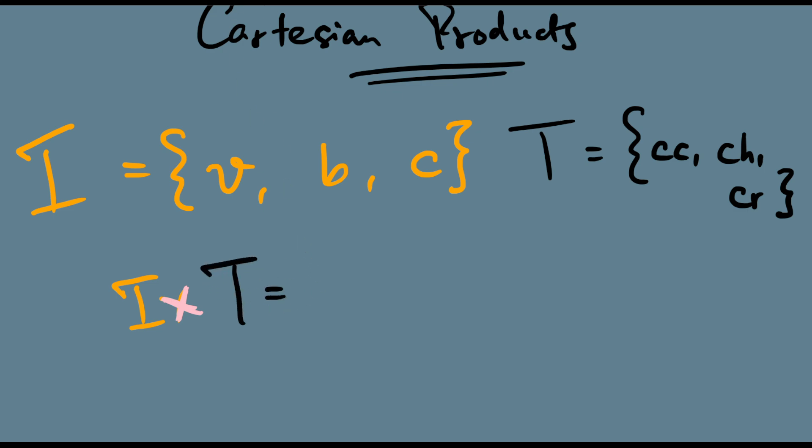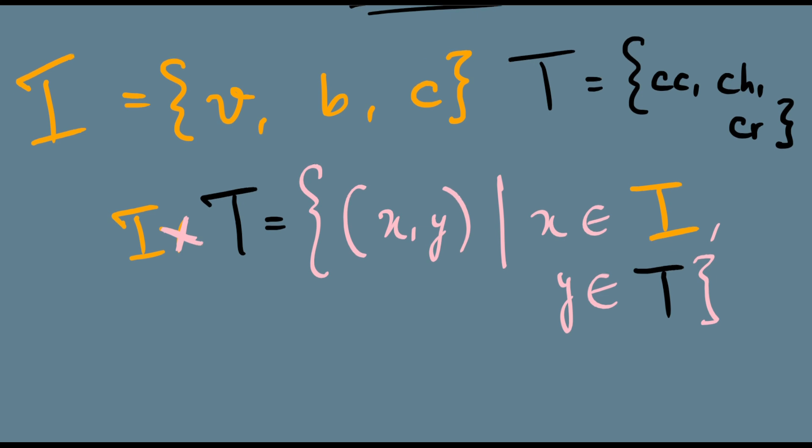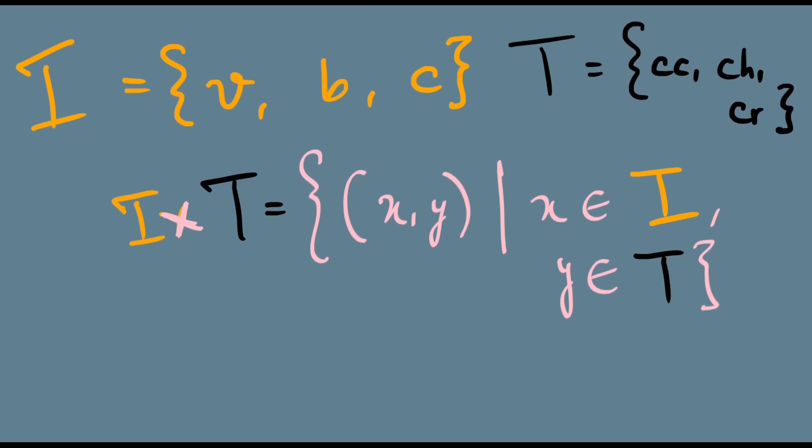We defined I cross T as the set of all ordered pairs (x,y) such that x belongs to my first set I and y belongs to my second set T. Well, this is all good. This is the set builder form of defining the set.